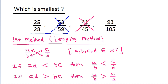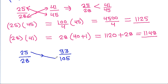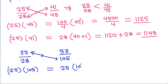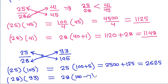If we compare 25/28 and 93/105, then 25 times 105 equals 25 times (100 plus 5), that is 2500 plus 125, which equals 2625. And 28 times 93 equals 28 times (100 minus 7).